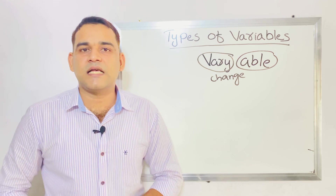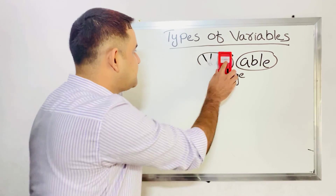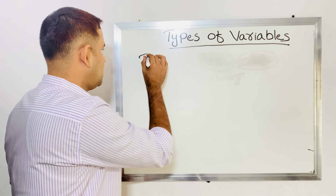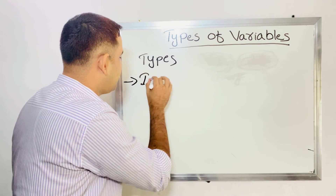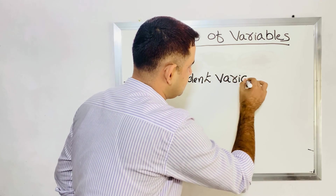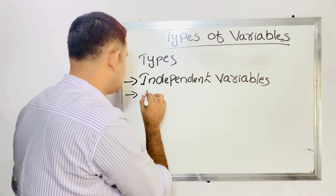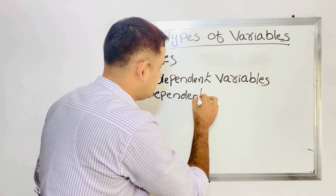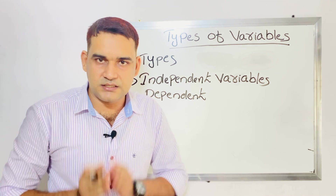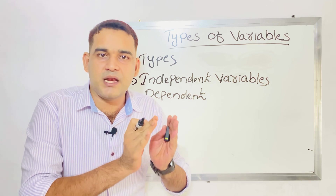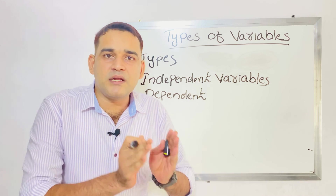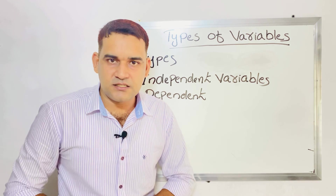Now we can see the different types or classification of variables. The first one is independent variable, and the second classification is dependent variable. From the name itself — independent variable means it is the variable that is responsible to make changes. You have to keep that in mind.